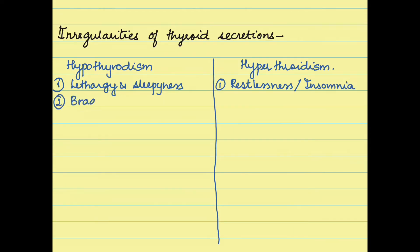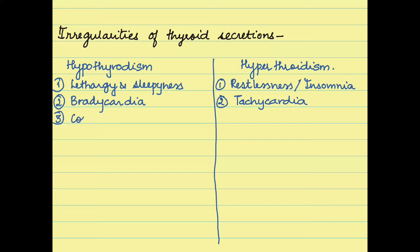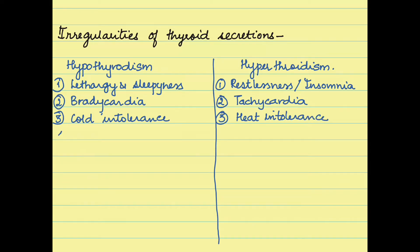Apart from that, it affects the heart rate. Hypothyroidism results in bradycardia, that is low heart rate, and hyperthyroidism results in tachycardia, that is increased heart rate. It also affects the body's ability to tolerate heat and cold — hypothyroidism results in cold intolerance whereas hyperthyroidism results in having more body heat due to high basal metabolic rate.